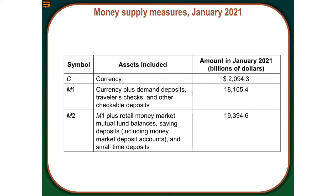I mentioned the term liquidity. Liquidity means how easily an asset can be turned into a form that can be used to buy something. Currency — the actual paper money and coins — is extremely liquid; we can use these for purchases immediately. We also commonly use savings and checking accounts, which are called demand deposits. We can write a check or use a debit card and immediately access those funds. Our different measures of the money supply are grouped by liquidity, with currency being the most liquid.